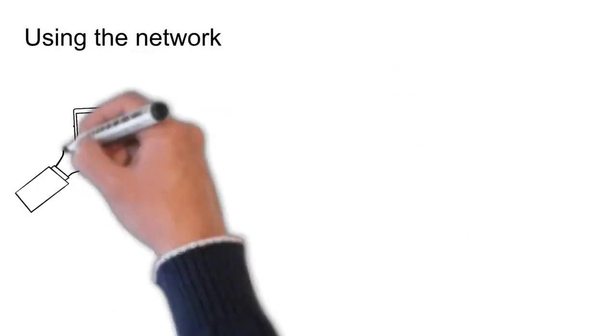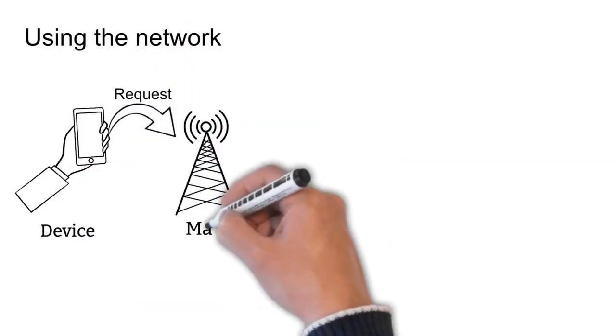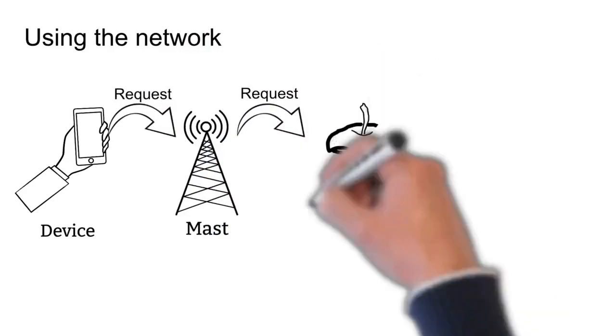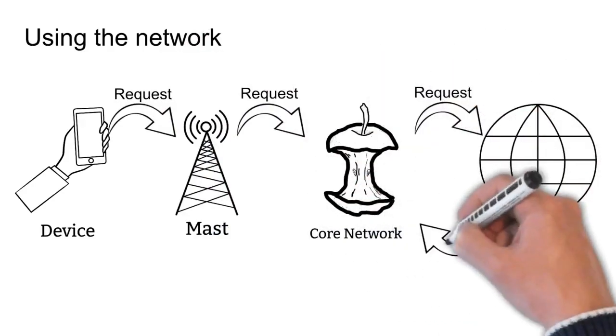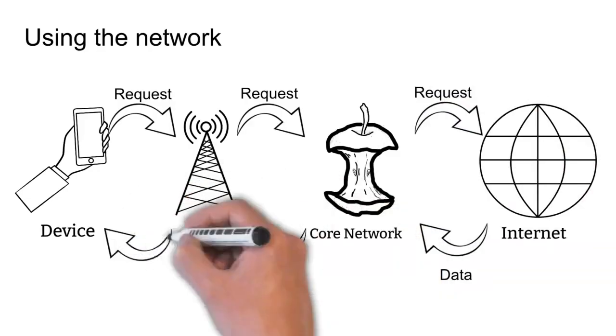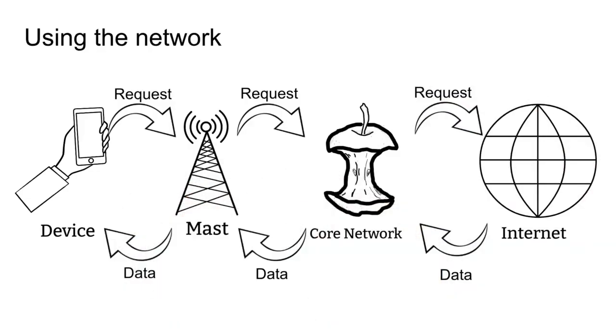To make a call or access the internet, the flow of information is nearly the same, except this time the core network passes the request onto an extra link in the chain: the internet. If the request is fulfilled, it transfers data back to the device the other way.